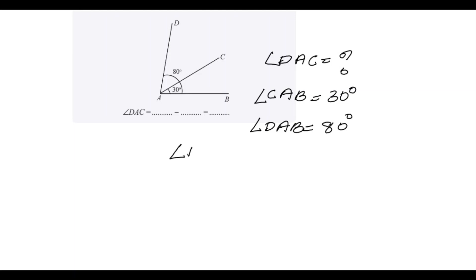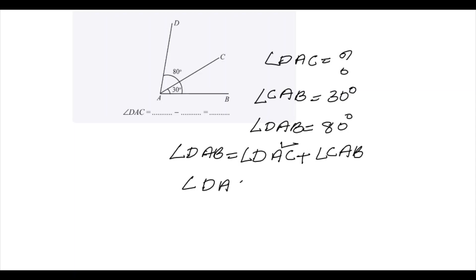Here we know angle DAB — that is the large angle — and it can be the sum of the other two angles: angle DAC plus angle CAB. So we need to find angle DAC. We can find angle DAC as the difference of the other two angles. So angle DAC is equal to angle DAB minus angle CAB.